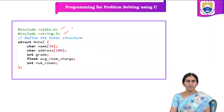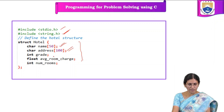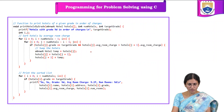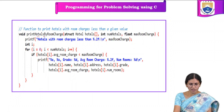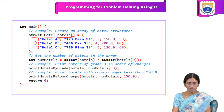We use two header files: stdio.h and string.h. First we define the structure — since it combines data of different types, the members are: hotel name (string), address (string), grade, average room charge, and number of rooms. Then we have two user-defined functions: print_hotels_by_grade and print_hotels_by_room_charge. Inside the main function, we declare a variable as an array of type struct hotel, and the size of this array is determined by the values we initialize — in this case, size is 3.